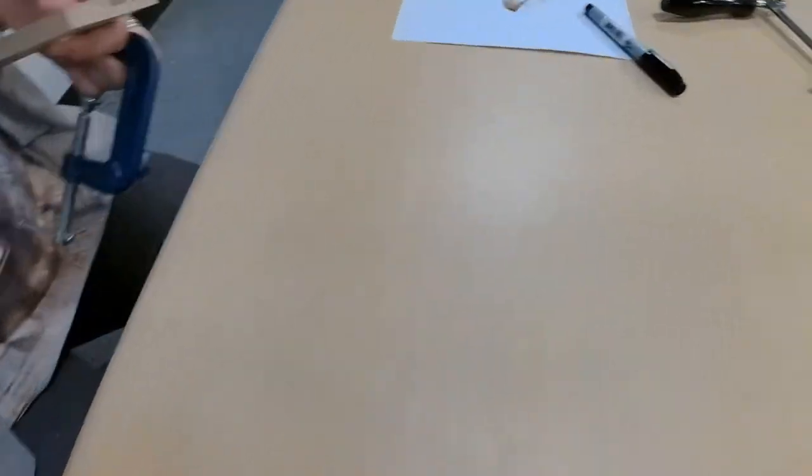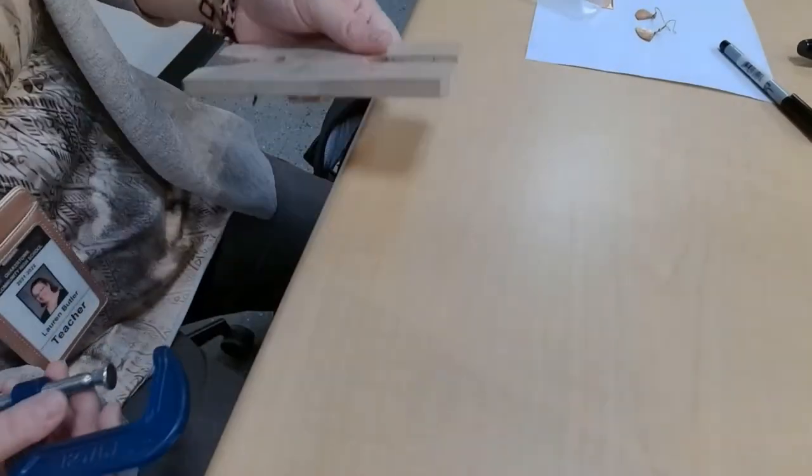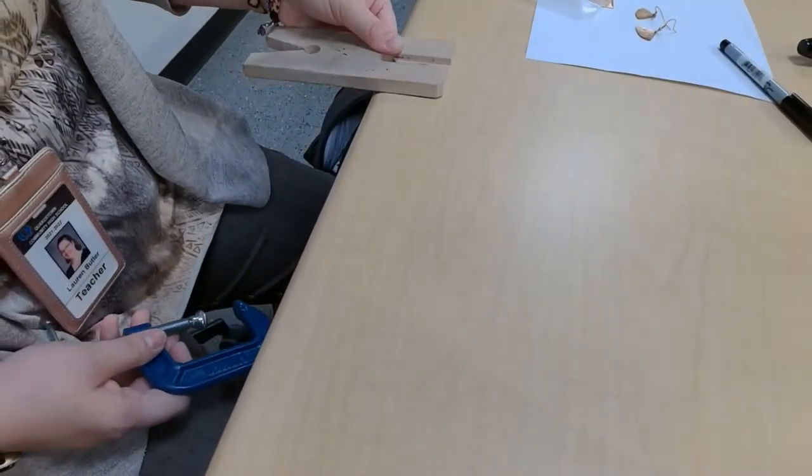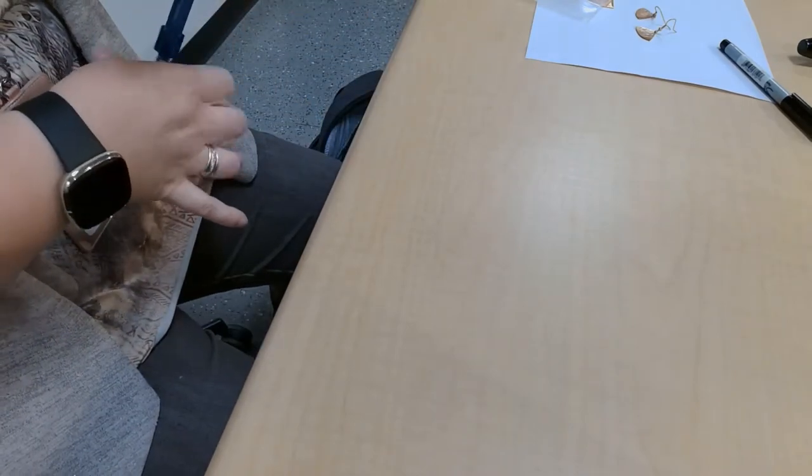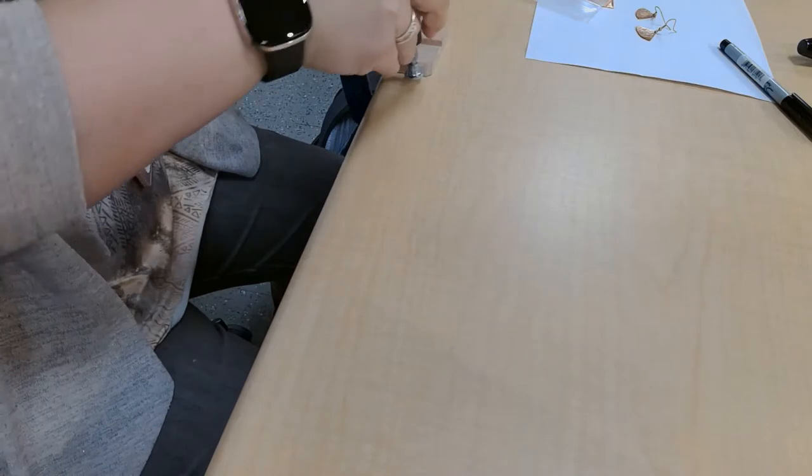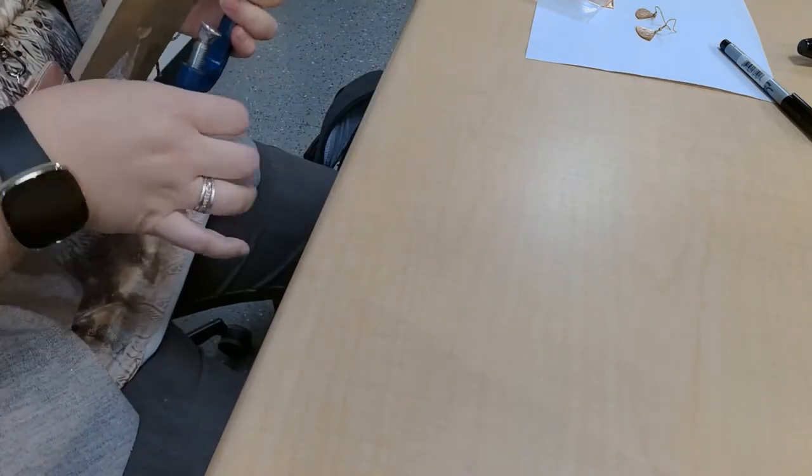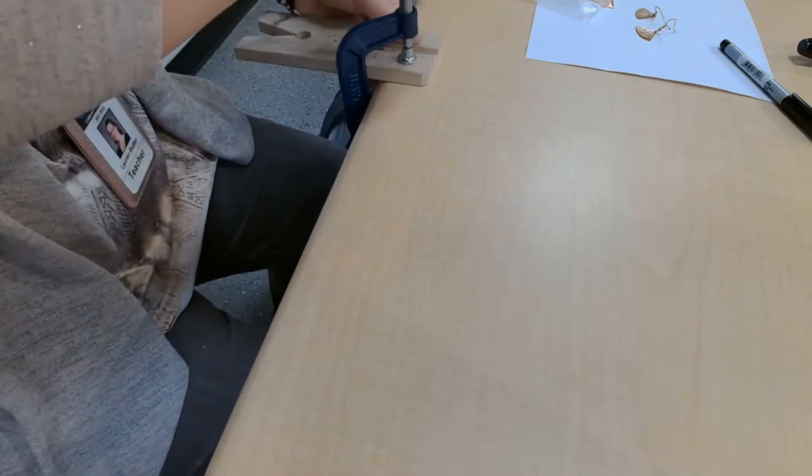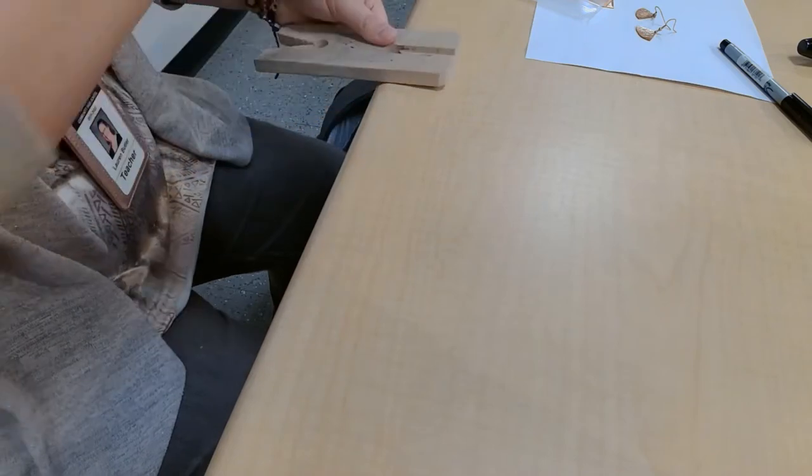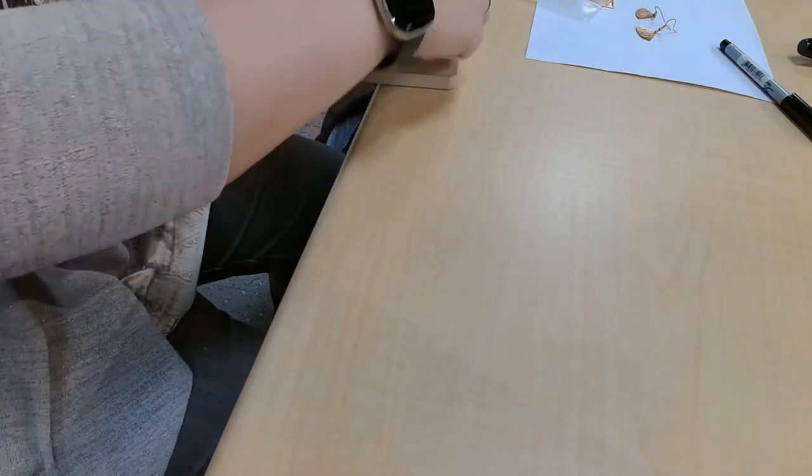And if you're using a C clamp like this, you just have the piece on the table, and then you just take your C clamp, and you just clamp it as best you can. Some of those clamps, the metal pieces, some of the screws are stripped. If that's the case with yours, then just get one of these clamps.